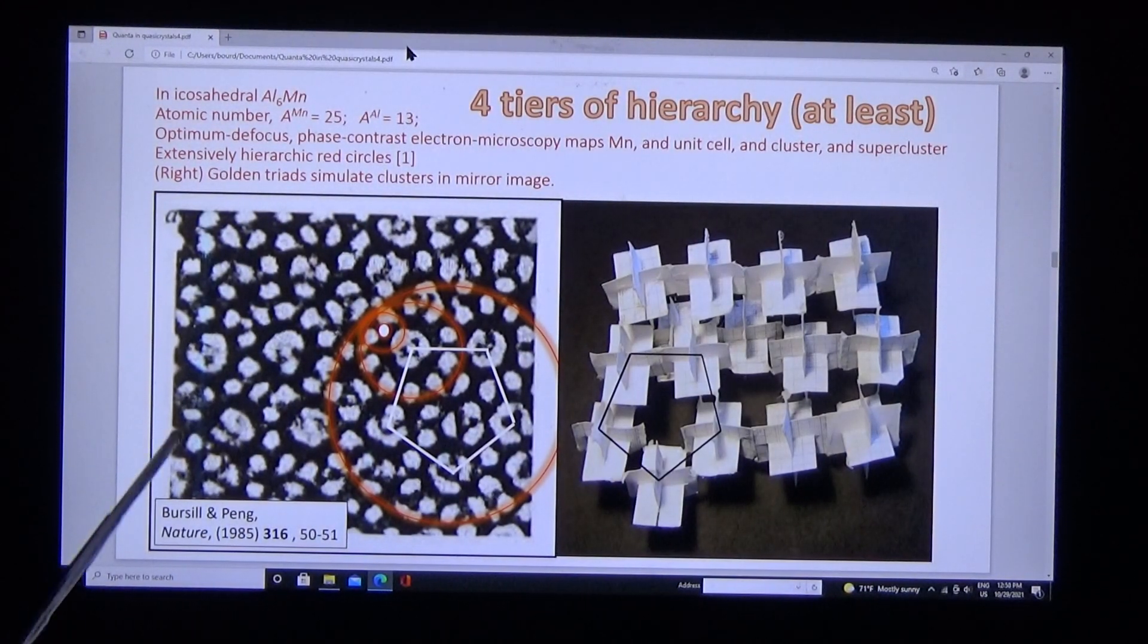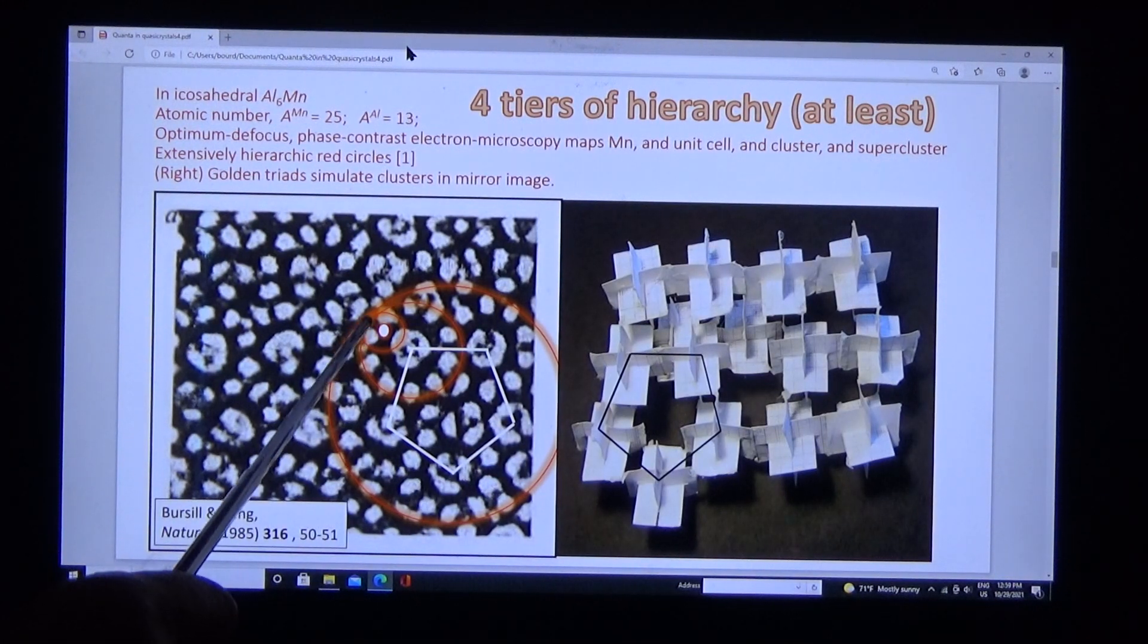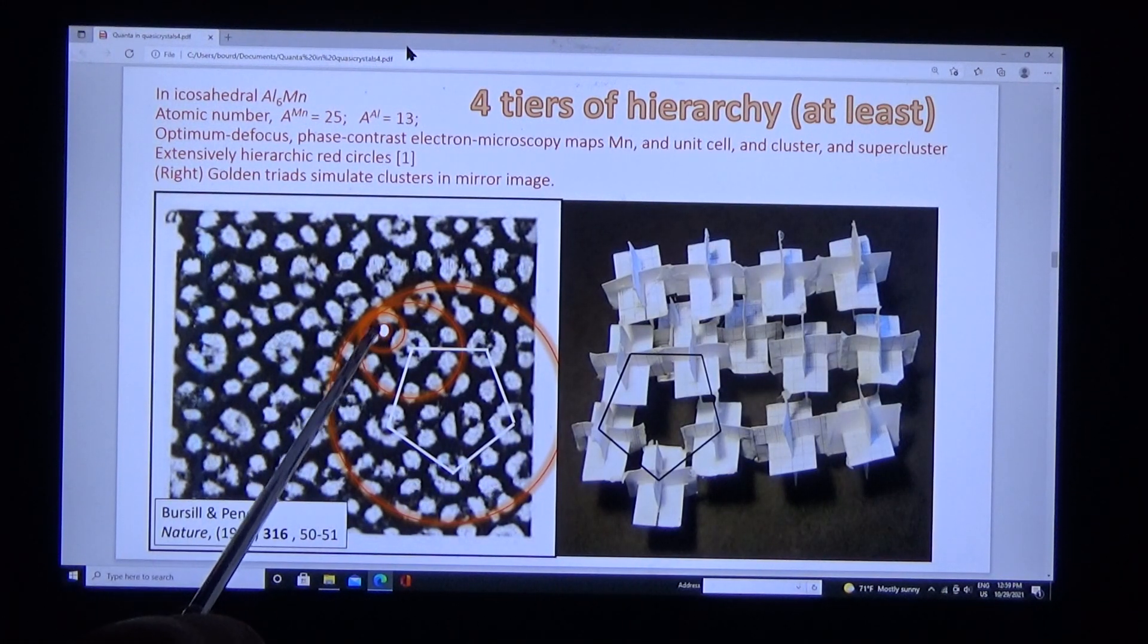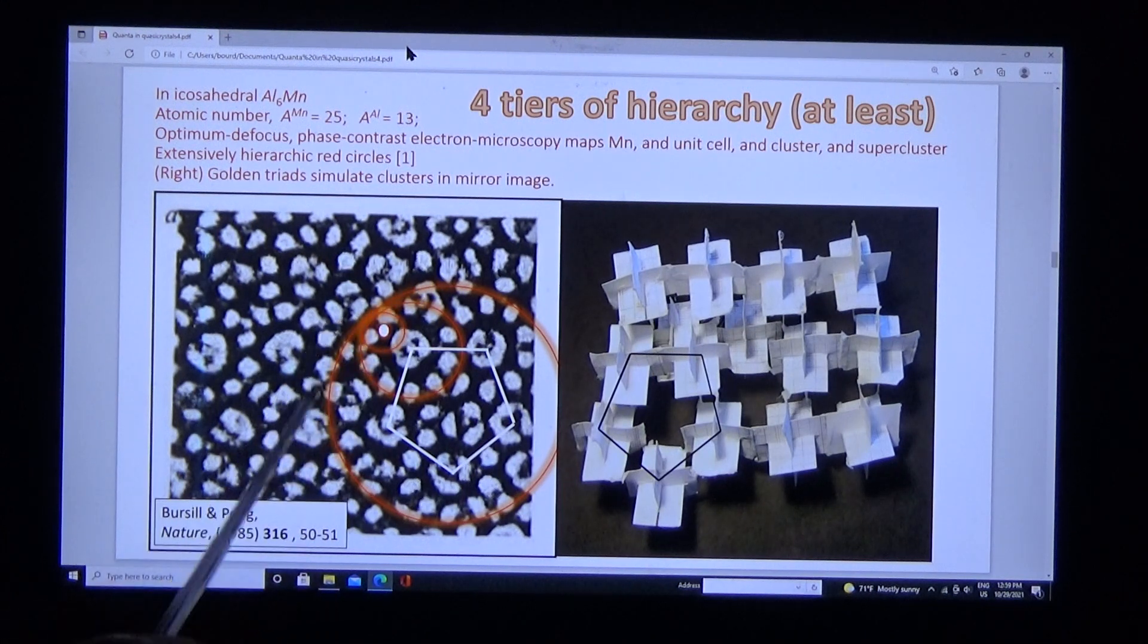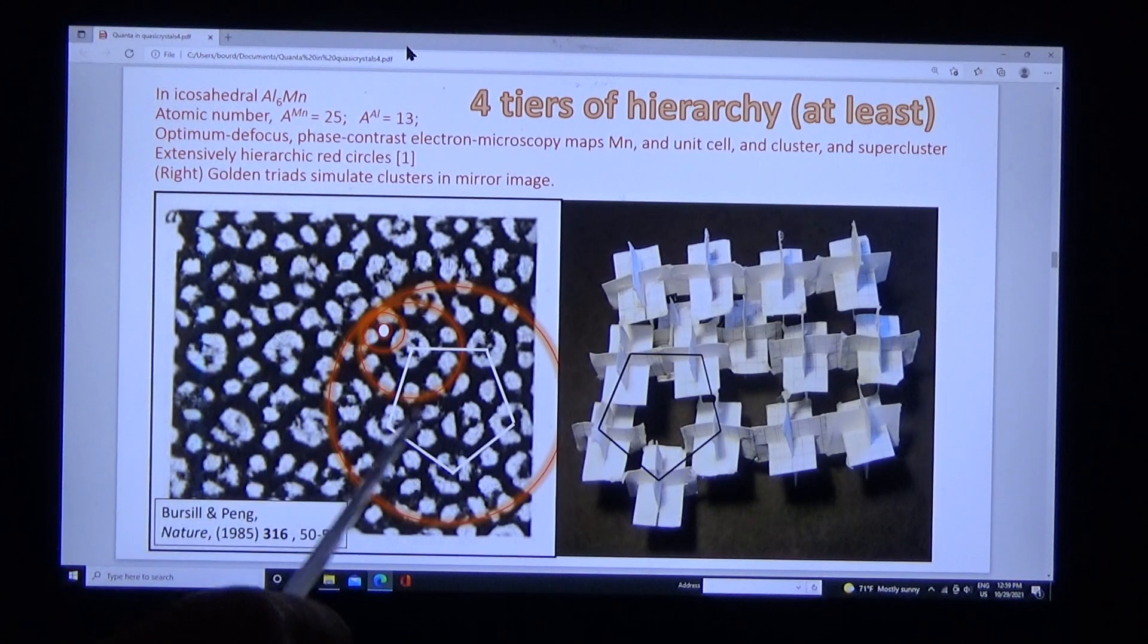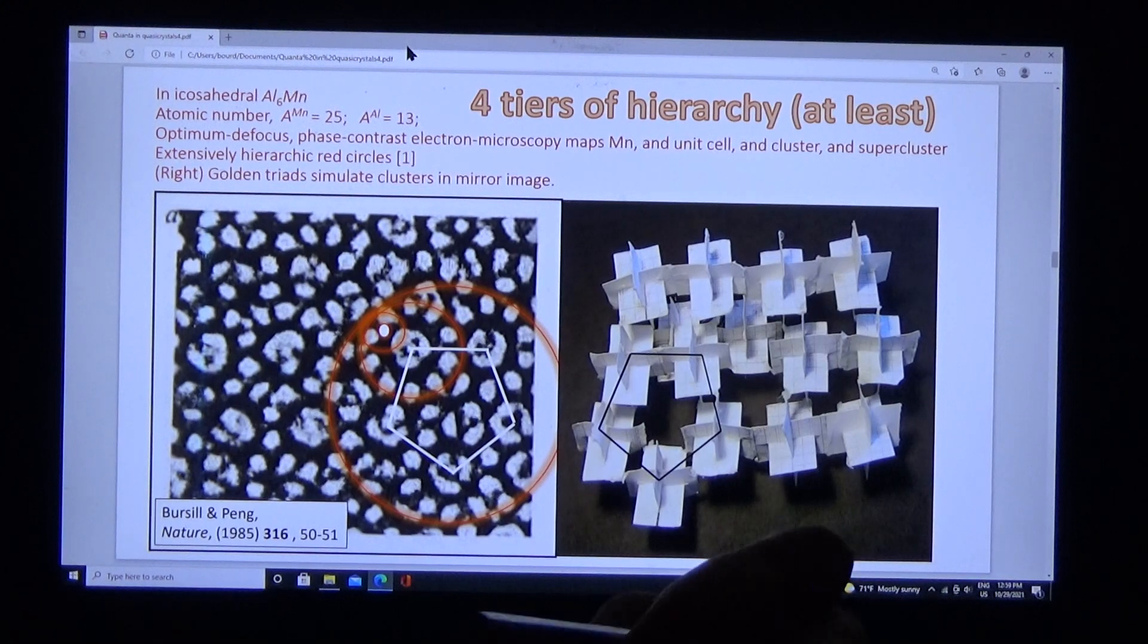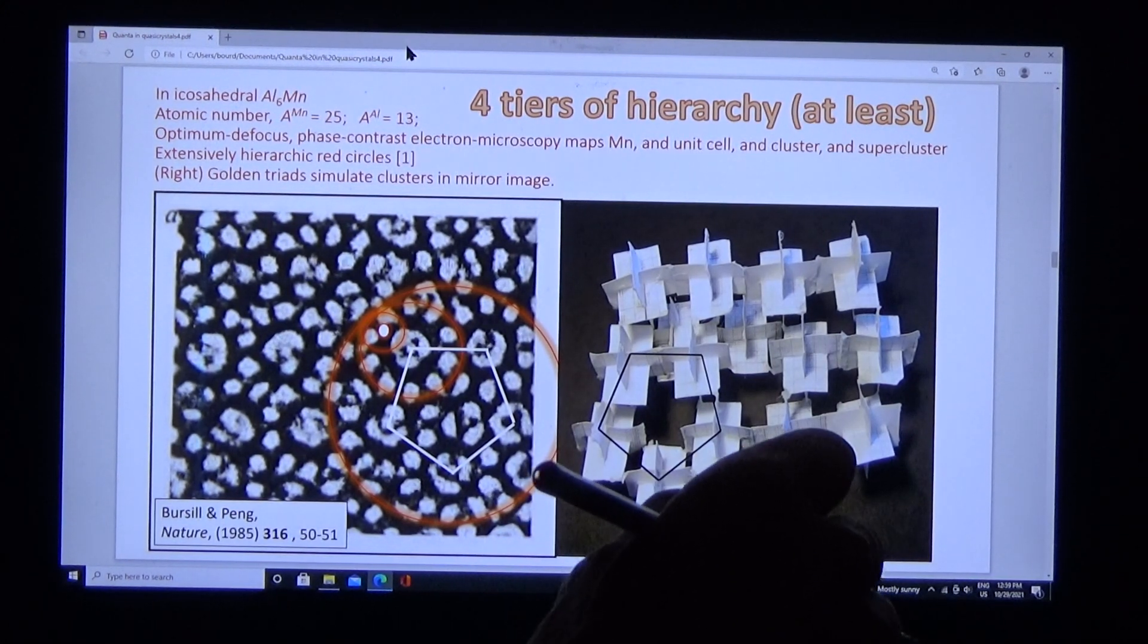Here's an image due to Burssel and Pank in phase contrast, optimally focused. Here's manganese—the image is in reverse contrast. Here's the unit cell and the cluster on two planes, and the supercluster, one plane of five clusters. That maps our model very well indeed.